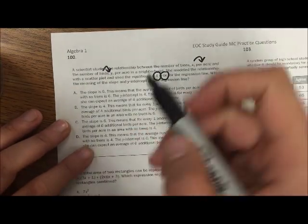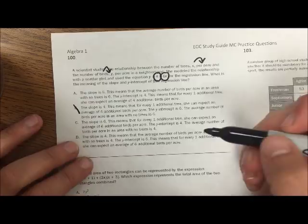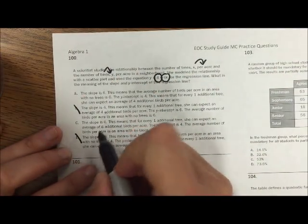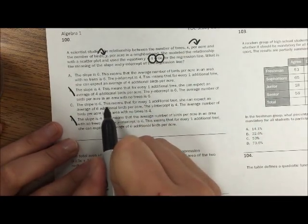The slope is not 4, so that one's automatically not an option. D also says the slope is 4. C says the slope is 6.